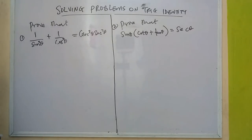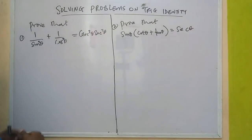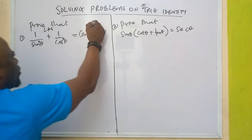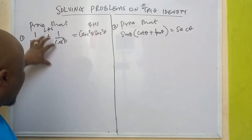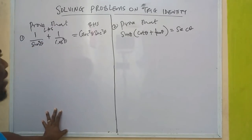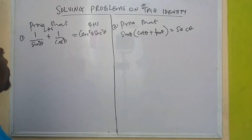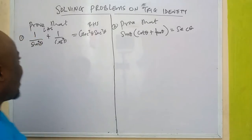The reason we have this question in this form is that they want us to work on the left-hand side and arrive at the right-hand side. By the time we have solved the left-hand side, we are going to arrive at the right-hand side. In doing this, we are going to make use of fractions, which most of us have done in elementary school.